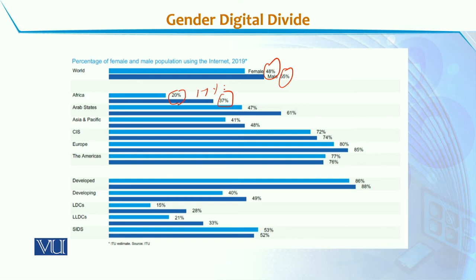If we talk about Arab states, there are 47% of men using internet and 41% of women using internet. The disparity there is around 7%, which is similar to the global level of disparity.